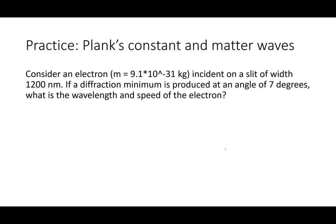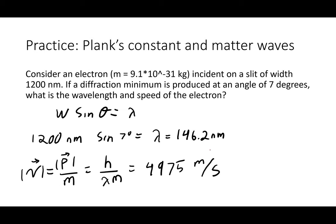Diffraction problems with electrons use the same equation we've been using: w sinθ = λ for the first diffraction minimum. We identify the electron's wavelength from the diffraction pattern using that equation, then use the de Broglie wavelength λ = h/(mv) to find the velocity: v = h/(mλ). This gives a speed of just under 5,000 meters per second.